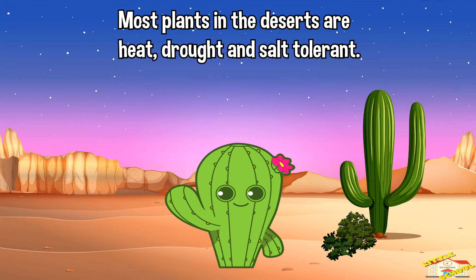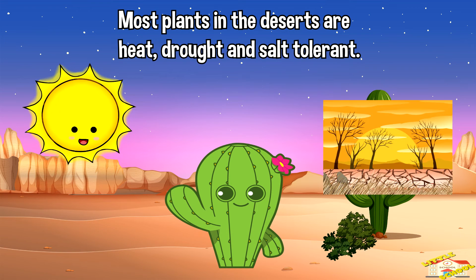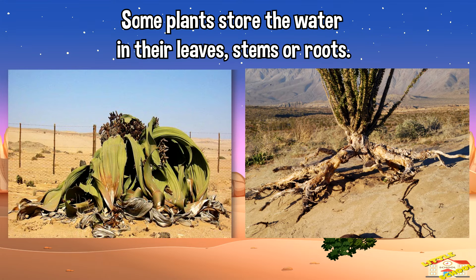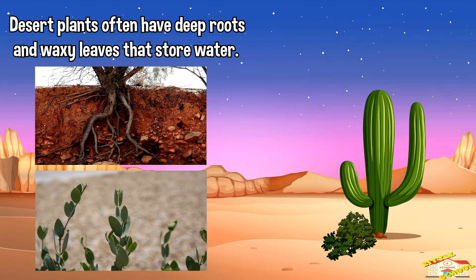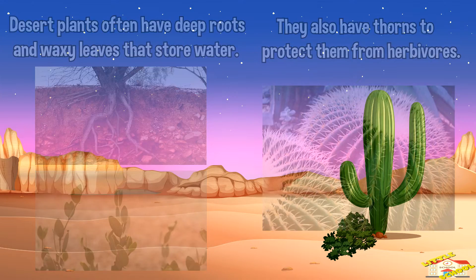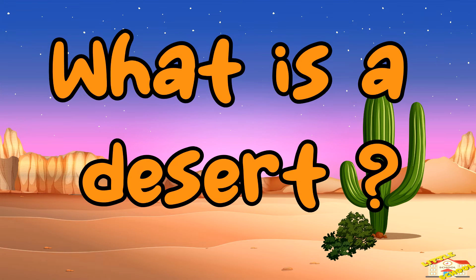Most plants in the deserts are heat, drought, and salt tolerant. Some plants store water in their leaves, stems, or roots. Desert plants often have deep roots and waxy leaves where they can store water, and they also have thorns, such as cacti, to deter herbivores.